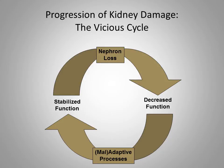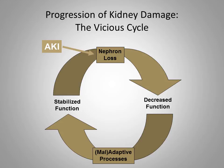Normal living causes loss of nephrons — up to 10% may be completely scarred by 40 years of age. Episodes of AKI cause more dramatic loss of nephrons, leading compensatory processes to kick in. These processes may stabilize overall kidney function, but they ultimately result in more nephron loss. This vicious cycle continues until the kidney reaches permanent failure.